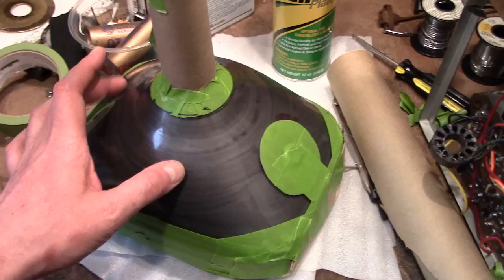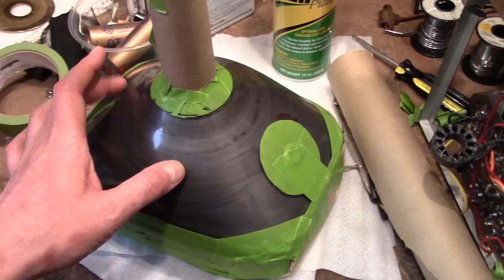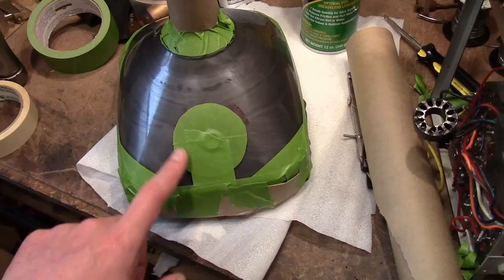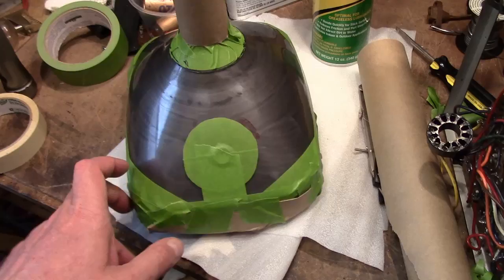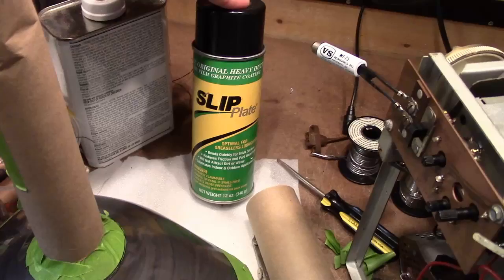One of which is to put a conductive coating back on the CRT - the original had flaked off. I've got it masked off, taking care to put a large circle around where the high voltage connects, and I've got the front of it covered up and the neck, and I'm going to be spraying it with slip plate conductive graphite coating.